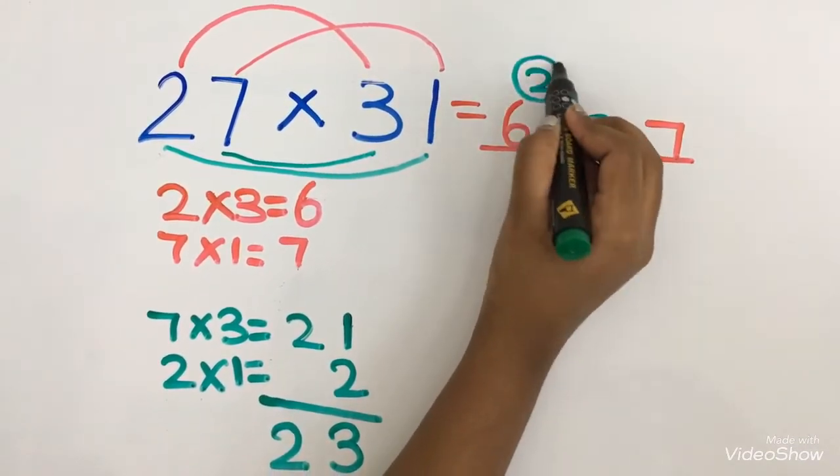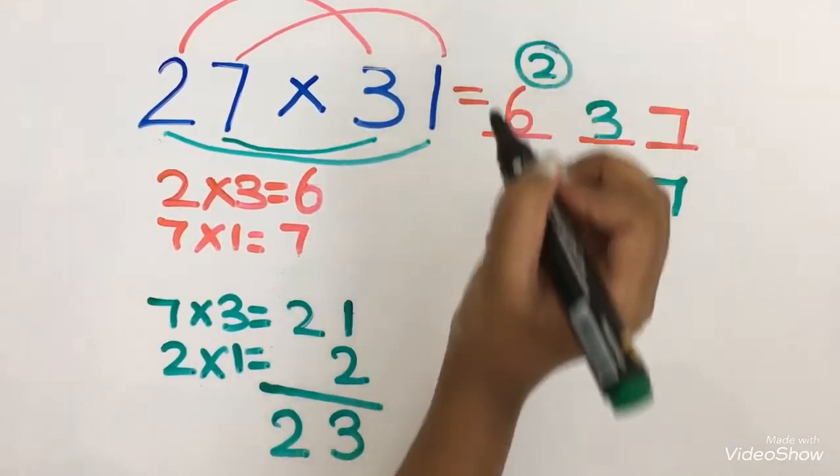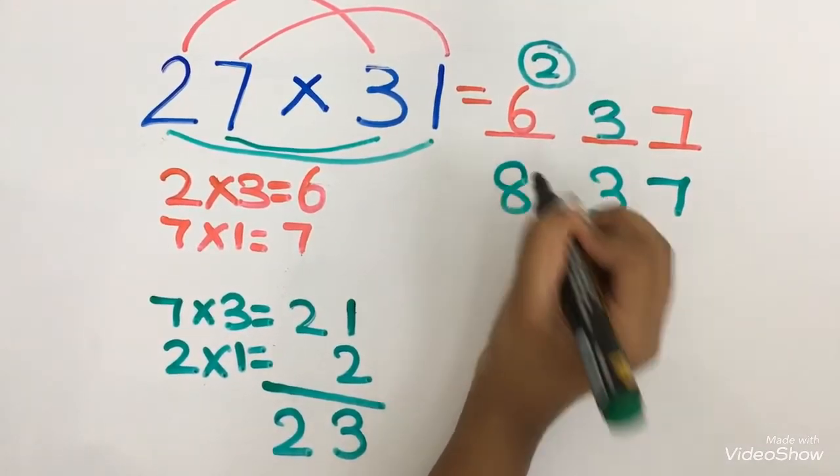Now let's add it. 7, 3 and 6 plus 2 is 8. This is the answer.